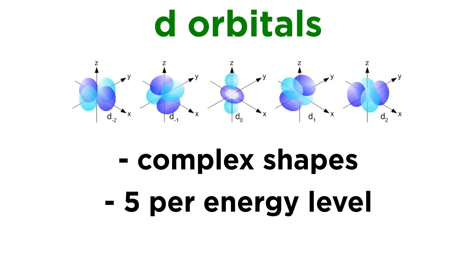The d-orbitals are more complicated, and there are five of these per energy level starting with n equals three. Three of them possess four lobes that extend in between the axes along the three planes. A fourth has its lobes on the x and y axes, and the fifth orbital has this totally different shape, with two lobes and a ring.